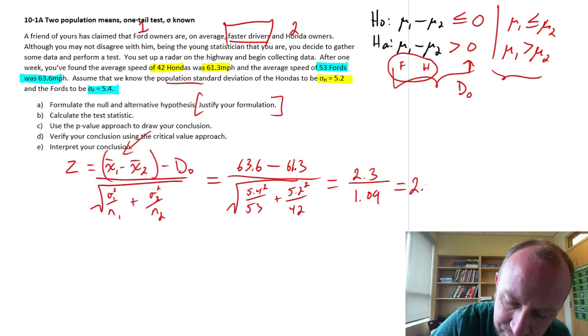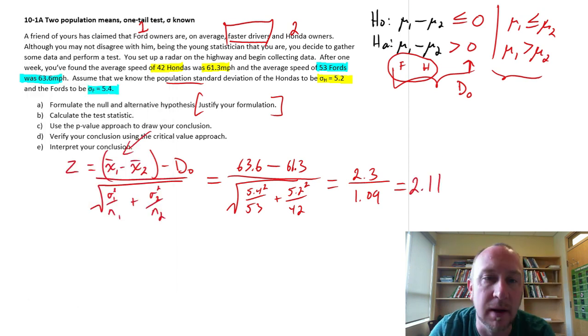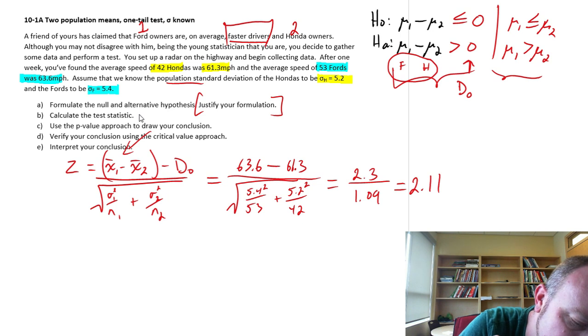Okay, so finally we have a test statistic. 2.3 divided by 1.09 is 2.11. So there's our answer for part B.